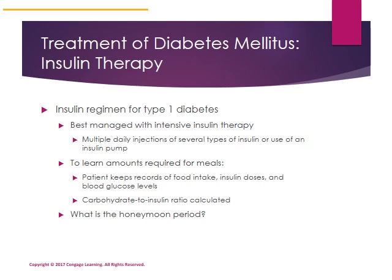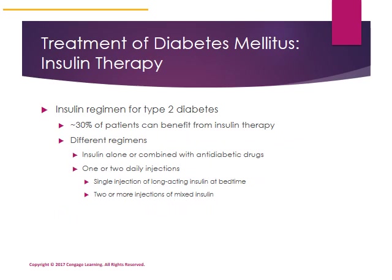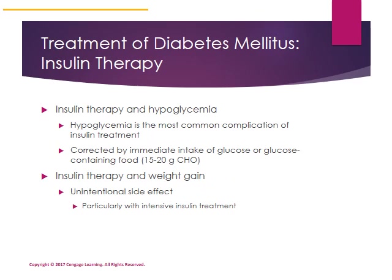The honeymoon period is discussed in your chapter in reference to type 1 diabetes — be familiar with what that is. In type 2 diabetes, about 30 percent of patients benefit from insulin therapy because their pancreatic beta cells have become exhausted and are no longer producing sufficient insulin, creating an insulin insufficiency and metabolic derangements. Different insulin regimens are available; type 2 diabetics usually require insulin alone or insulin combined with anti-diabetic drugs. The most common complication of insulin treatment is hypoglycemia, which can be corrected with immediate ingestion of glucose or glucose-containing food.